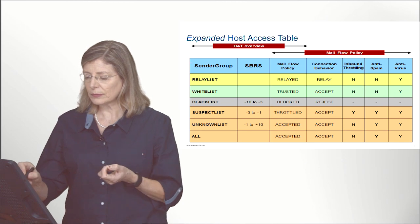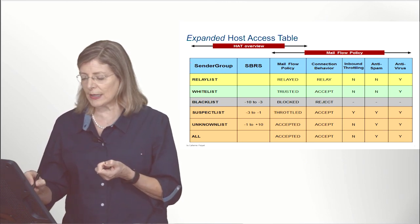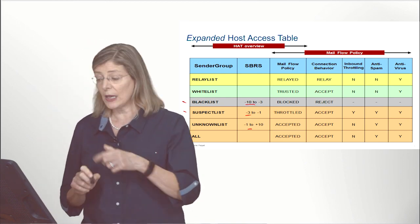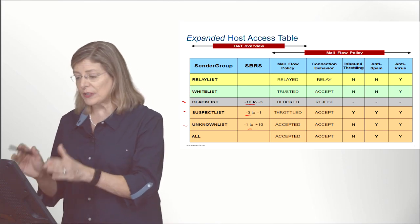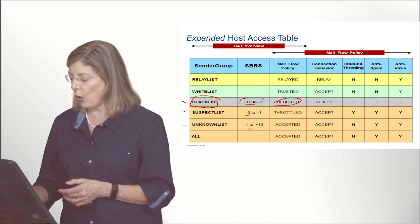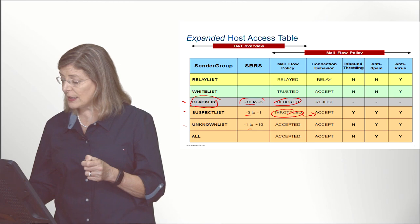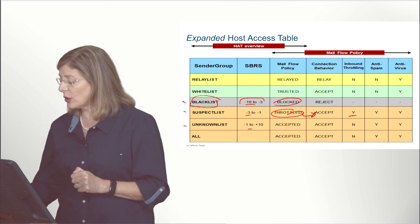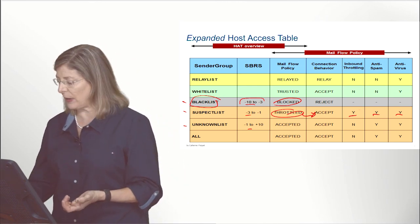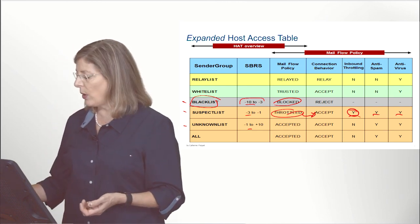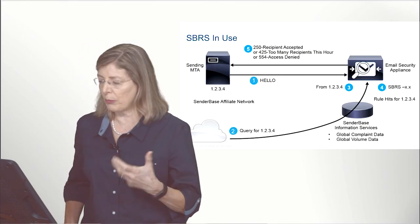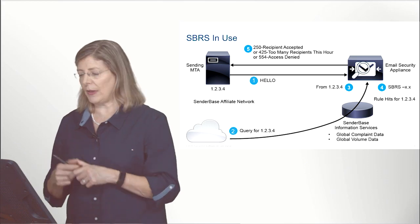In summary: when we receive an incoming SMTP connection request, we assign the sender to one of three sender groups based on their reputation score. The sender group determines the mail flow policy, and the mail flow policy tells the ESA whether to accept or not accept the connection — and whether to apply additional requirements, such as restricting the number of emails per hour for those on the suspect list.